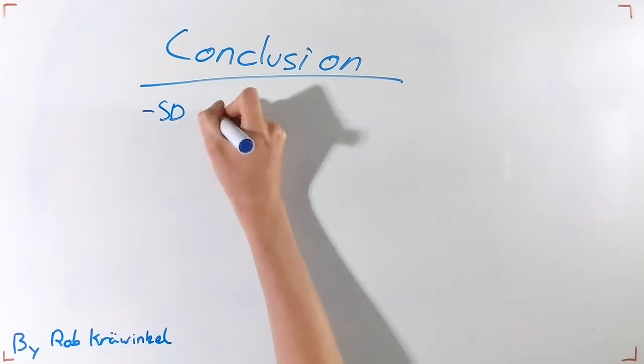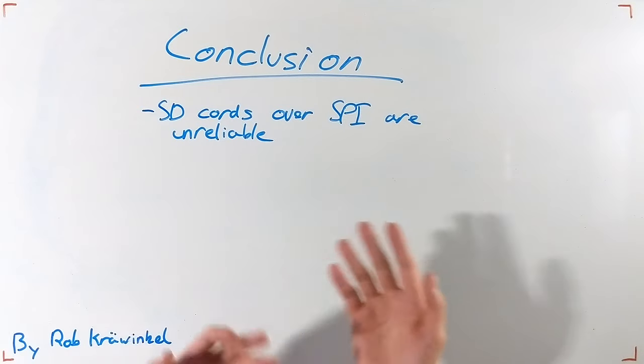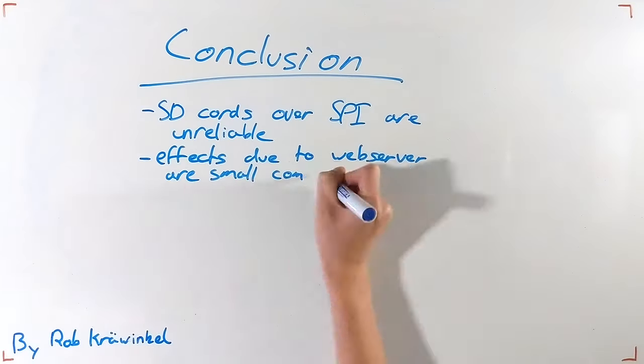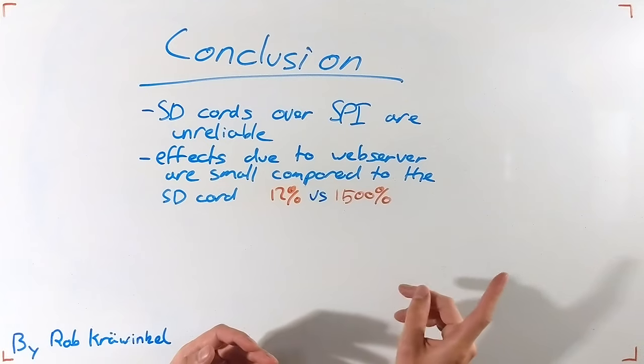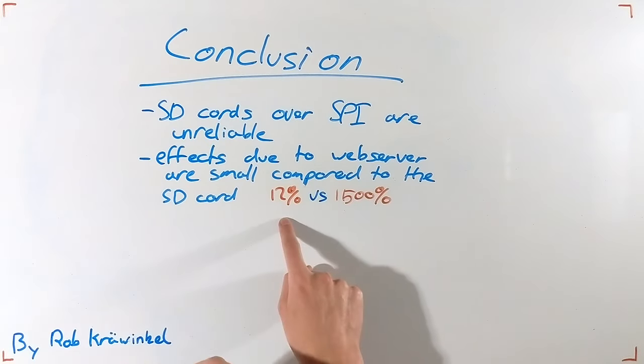In conclusion, we have shown that the SD cards being accessed over SPI are unreliable. Meanwhile, we have shown that when implementing an SD web server, the delays caused by it are not the largest troubles. Delays due to the SD card can be observed to be much higher than the web server would be able to do.